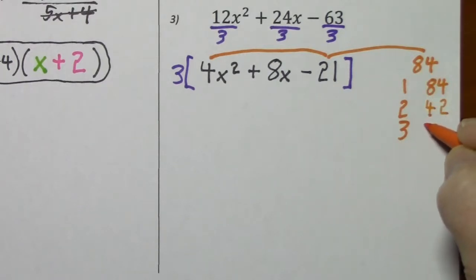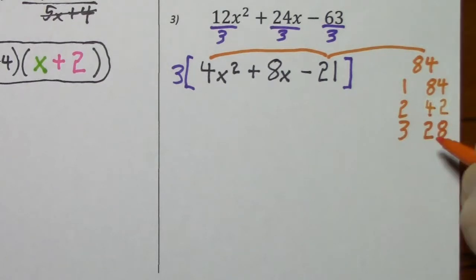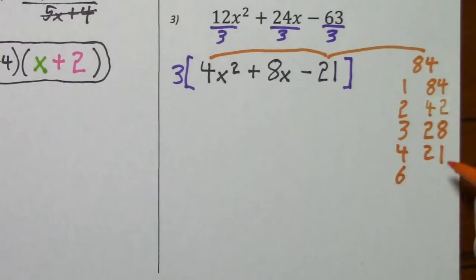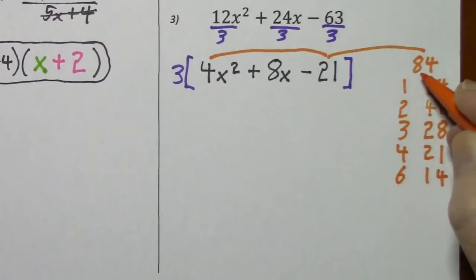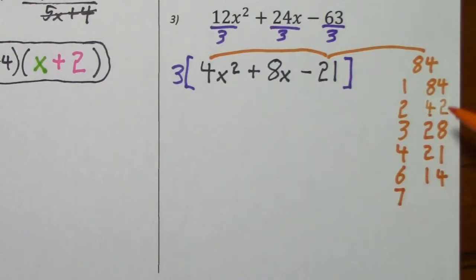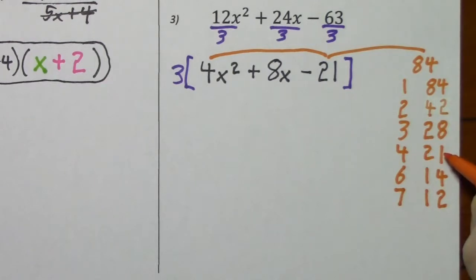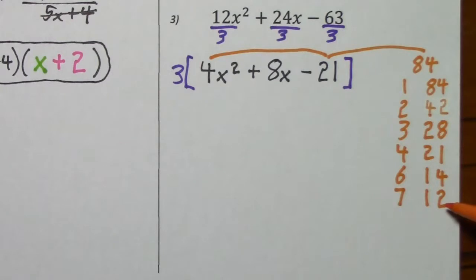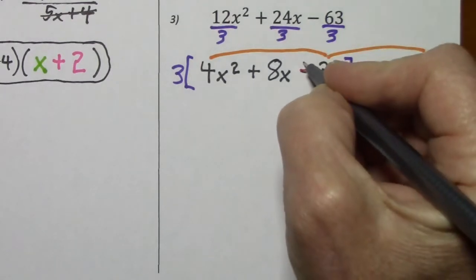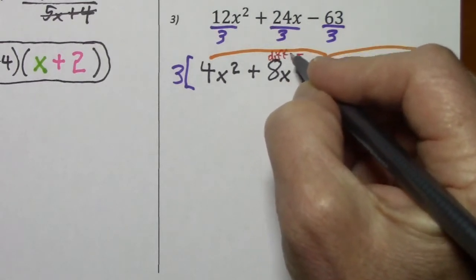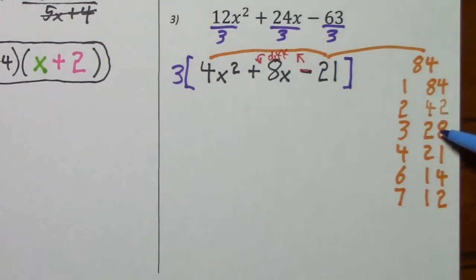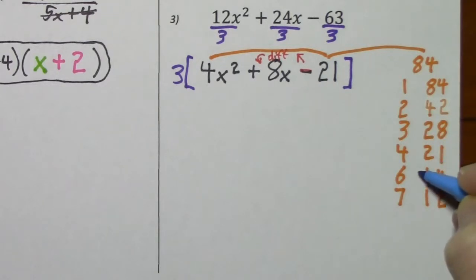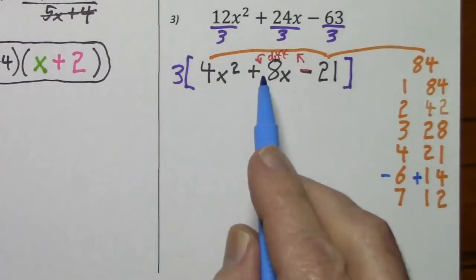Going through the factor pairs: 3 goes in, 28 times. 4, cut that in half. 5 won't work. 6 goes in, 7 — cut that in half. 7 does go in, 12 times. 8 won't work. 9 doesn't go in. 10, 11 won't work, and you already have 12. Noting that the last term is negative, we're looking for a difference of positive 8. If we had positive 14 with negative 6, we would get our positive 8.